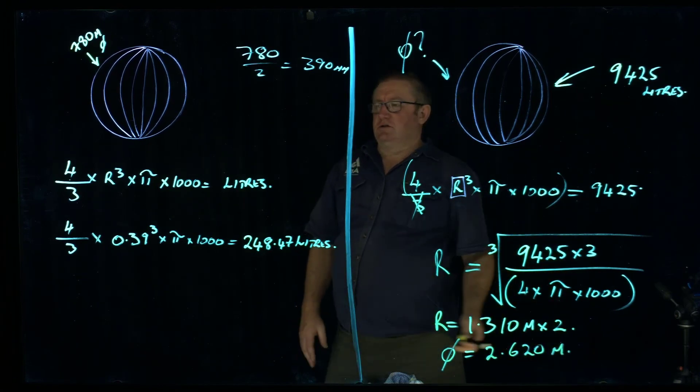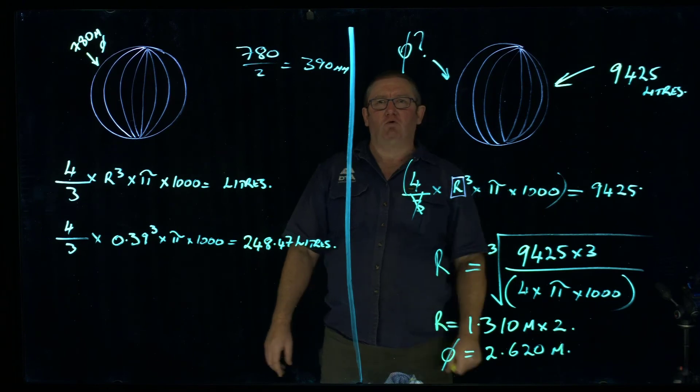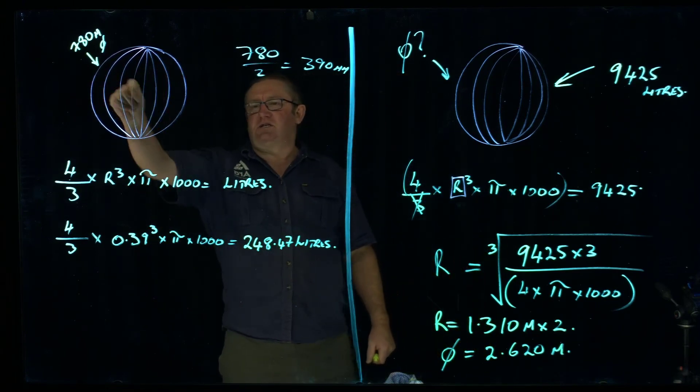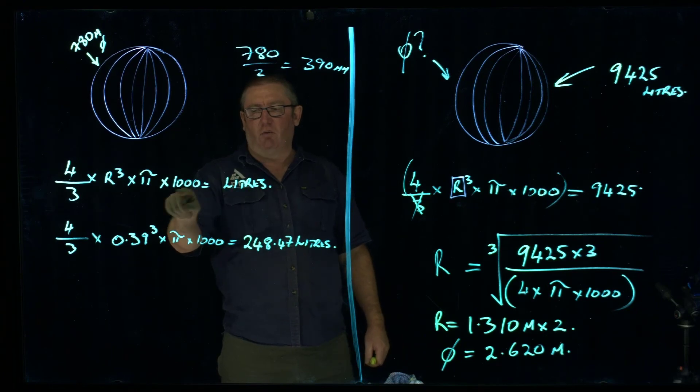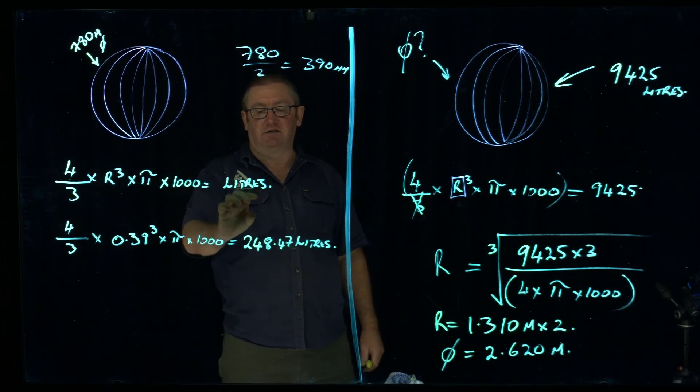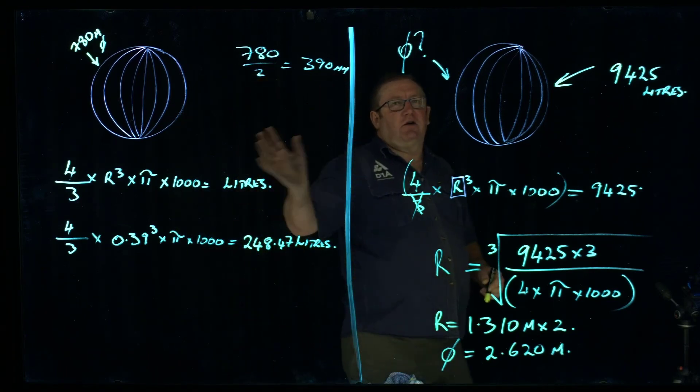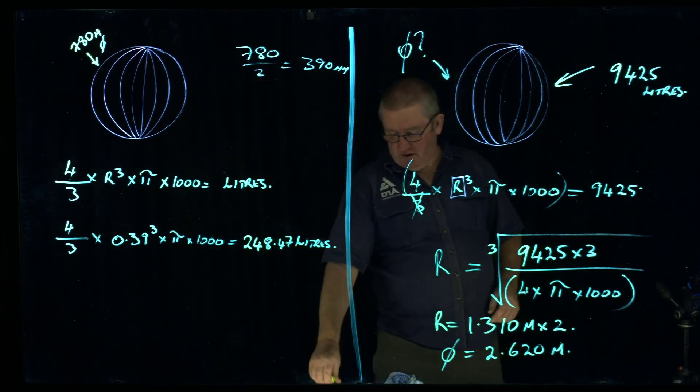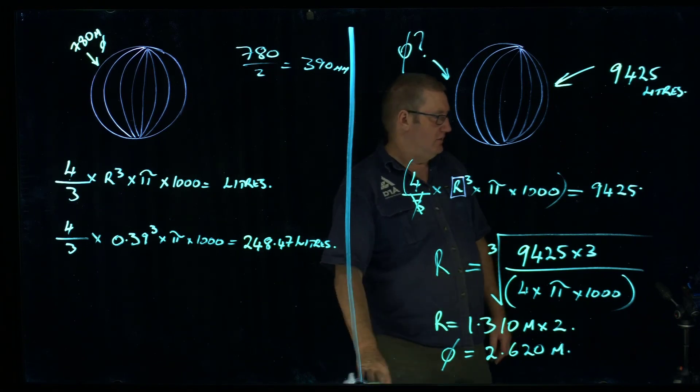So I've given you both the formulas. Well, the formula is the same, but we have to transpose it when working back towards the diameter. Whereas we started off with the diameter, we could work out the literage if we put the 1,000 on there. If we didn't put the 1,000 on there, it was going to give us it as meters cubed. So that's how you resolve for a spherical tank. Thank you.